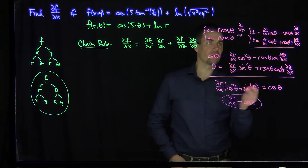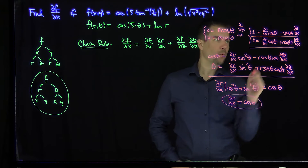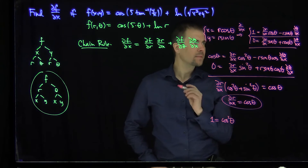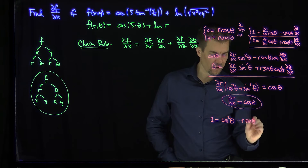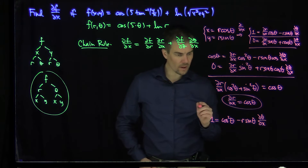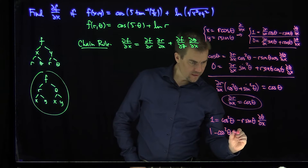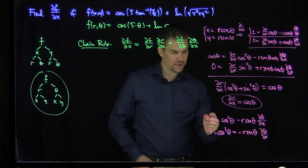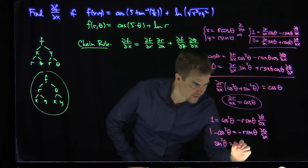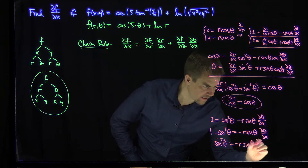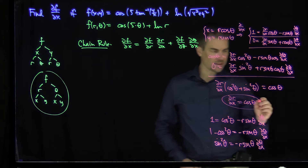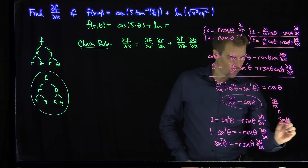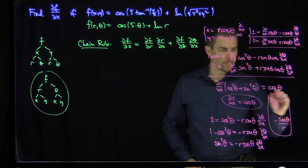Now we find partial theta partial x using the first equation: 1 equals partial r partial x times cosine theta — which is cosine squared theta — minus r sine theta times partial theta partial x. So 1 minus cosine squared theta equals negative r sine theta times d theta dx. Since 1 minus cosine squared theta equals sine squared theta, we get d theta dx equals negative sine theta over r.